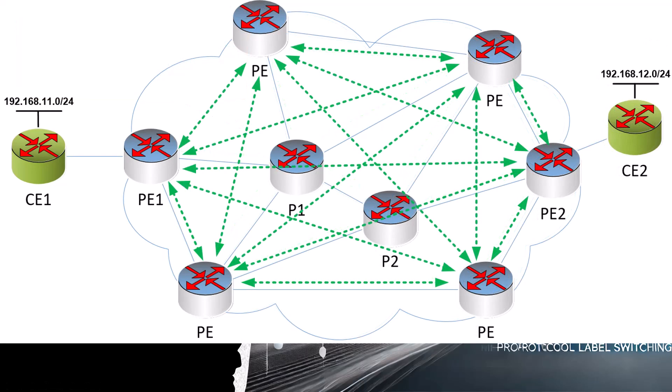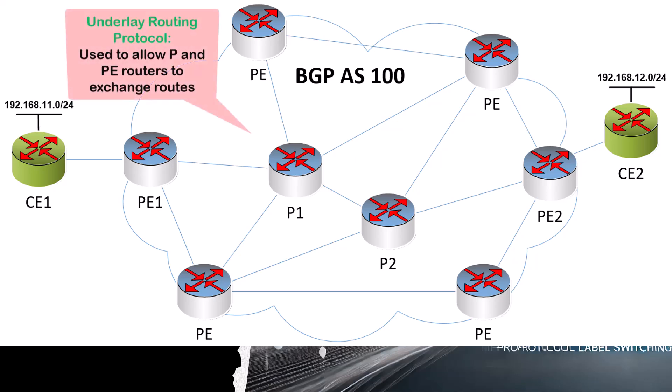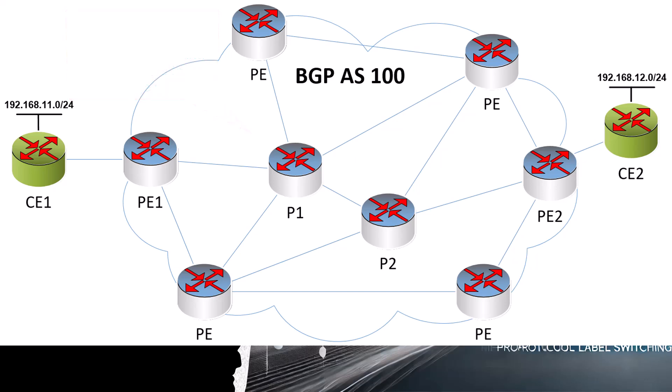Third, we need to deploy some protocol that will allow the PE routers to share their customer networks with each other, so that they know what labels to push onto the packets as they send them through the MPLS core. And this is where BGP comes in. For our purposes, we're going to assume that the whole of the ISP network is contained within a single BGP autonomous system, or AS — we'll use AS number 100 to define it. This AS contains all of the PE and P routers that belong to this MPLS topology. We already have an IGP running which allows all of the PE and P routers to reach each other, and since we're configuring BGP within a single AS, we're going to be creating IBGP peerings.